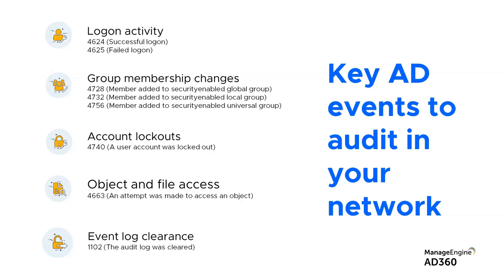Attackers also try to clear their tracks to make root cause analysis more complicated. They go and turn off or clear the entire event log, which also leaves a breadcrumb allowing you to pinpoint where it all started. A couple of activities and events to monitor are listed here — take a screenshot or make a note, as you can go back and have these event IDs turned on for auditing.